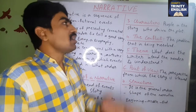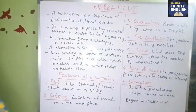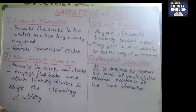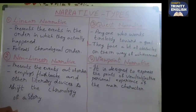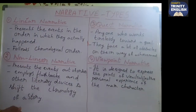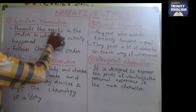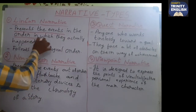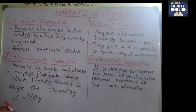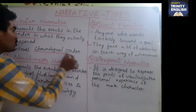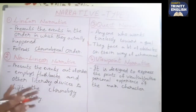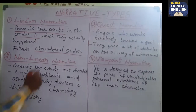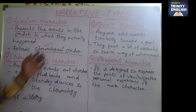Now let us look at the types of narrative. We have four types. The first one is linear narrative. In a linear narrative, the writer presents the events in the order in which they actually happened, following strict chronological order. Without this order, it doesn't take place — the linear narrative always follows chronological order.